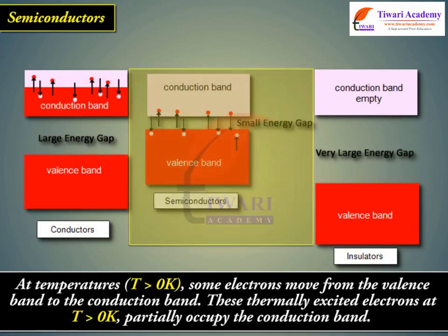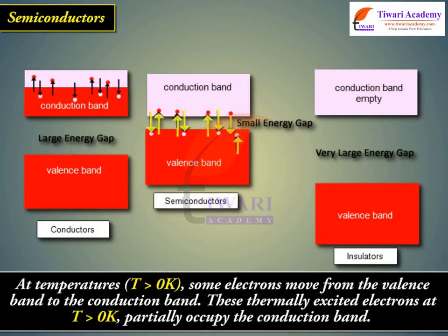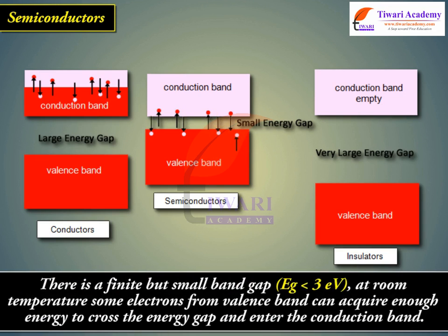Semiconductors: At temperatures T greater than 0 Kelvin, some electrons move from the valence band to the conduction band. These thermally excited electrons partially occupy the conduction band. There is a finite but small band gap, e.g. less than 3 eV at room temperature. Some electrons from the valence band can acquire enough energy to cross the energy gap and enter the conduction band.